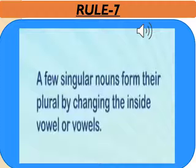Rule number 7: a few singular nouns form their plural by changing the vowel or vowels. They become plural by changing the vowels inside them. For example, 'man' — M-A-N — the vowel is A. To make its plural form, we change A and replace it with E, making its plural form 'men' — M-E-N.